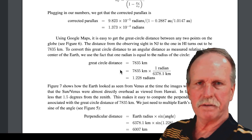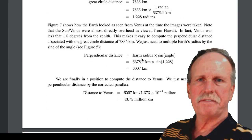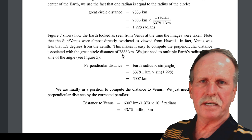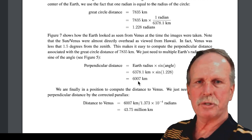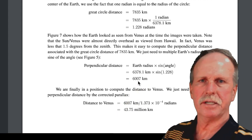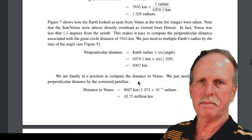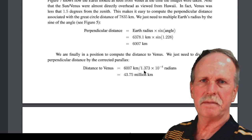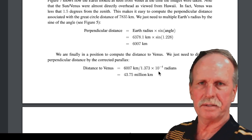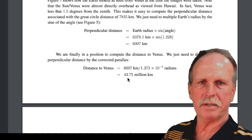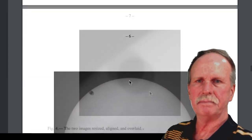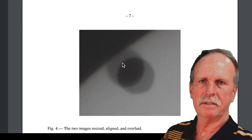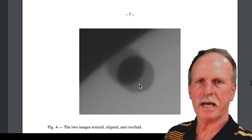He looked at the distance between the observers in Hawaii and Princeton, using that to find the sine of the angle and create the baseline. Even though the land distance is 7,835 kilometers, the actual core distance between those two points — the baseline — is 6,007 kilometers. With that, he was able to calculate the distance to Venus by taking the base distance divided by the parallax angle, giving him 43.75 million kilometers. Here's a nice image of the overlapped Venuses — he took the center here to the center here, counted the pixels, and that's how he got the mathematics.